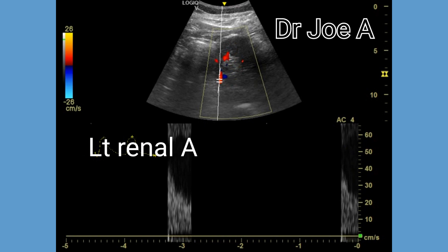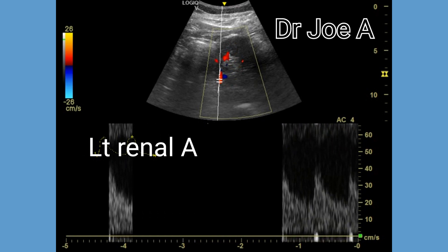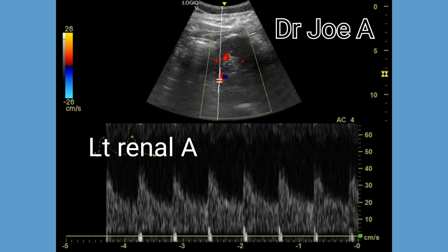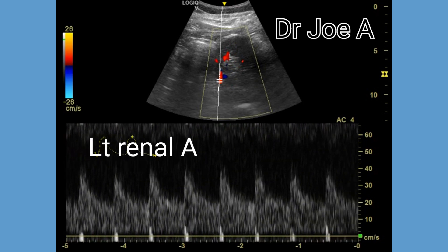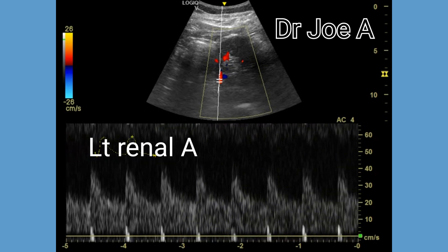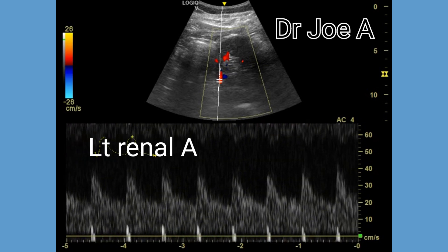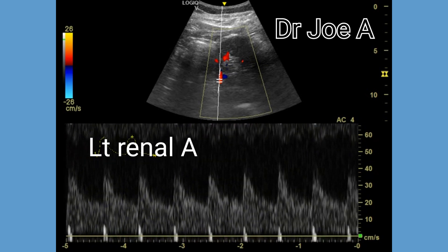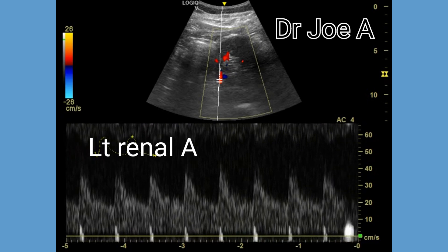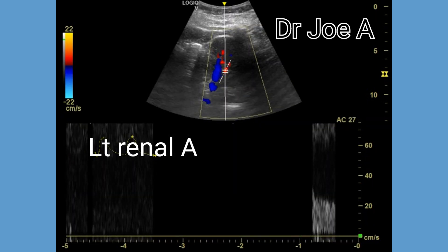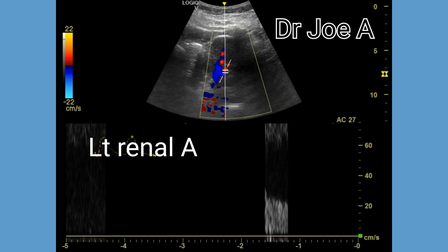Having seen the right renal artery, we now move over to the left renal artery. The left renal artery also shows a normal spectral Doppler waveform. The PSV is around the same as the right side — less than 180 centimeters per second.